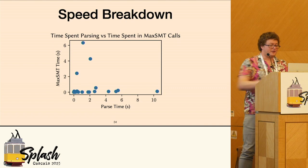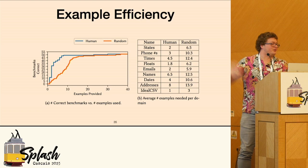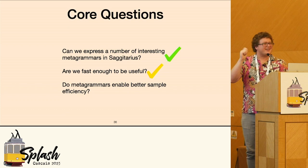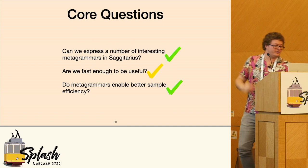And for example efficiency, I don't have time to go into the details, but yeah, we're pretty sample efficient. So I would say for the core questions, we definitely succeed. For fast enough to be useful, I think we can do a little bit better. And do metagrammers enable sample efficiency? Yes.